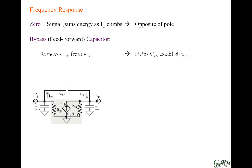The first thing to note is that this capacitor, as frequency increases, has decreasing impedance, so a voltage across it will induce current flow through the capacitor. The first thing it will do is take current from the input, so it helps establish a pole at the input.